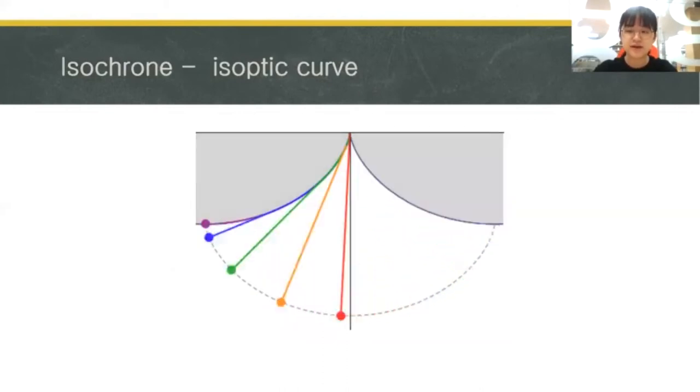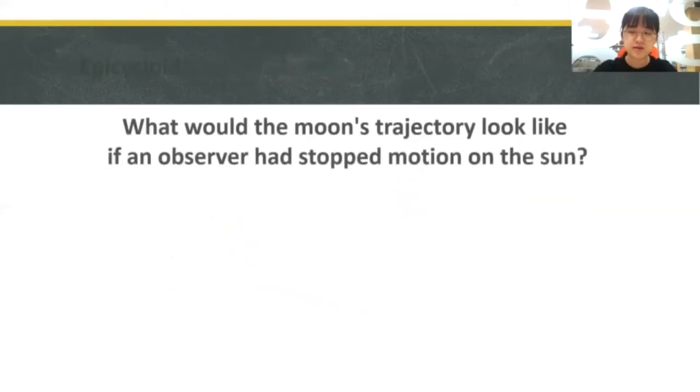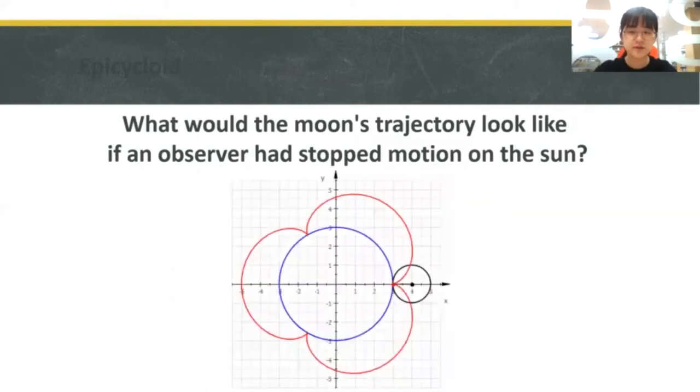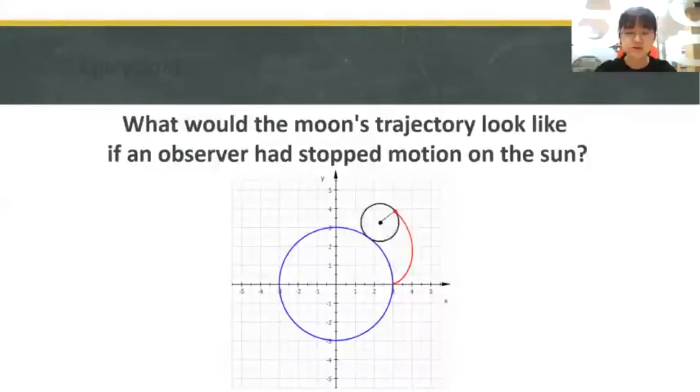Now we're going to talk about the various forms of cycloid, but let me ask you a question first. What would the Moon's trajectory look like to a stationary observer on the Sun? Think of the centre as the Sun, and the centre of the outer circle as the Earth. The circumference of the outer circle becomes a revolutionary orbit of the Moon, so the Moon will be positioned at a point on the outer circle. The Moon will draw curves, as shown on the screen, which is called epicycloid.